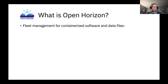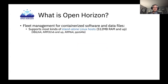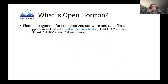So what is Open Horizon? It's fleet management for containerized software and data files, and it supports most kinds of standalone Linux hosts, 512 megabytes of RAM and up. I actually sometimes deploy it onto Raspberry Pi 1 that only has 256 megabytes of RAM, and it works just fine there, but the workloads can't be very large. We support x86-64, ARM32v6 and above, ARM64 which is the V8 platform, and we even support PPC64LE.